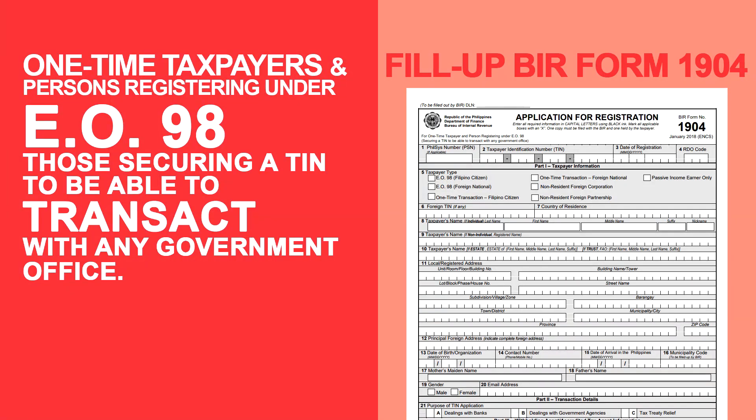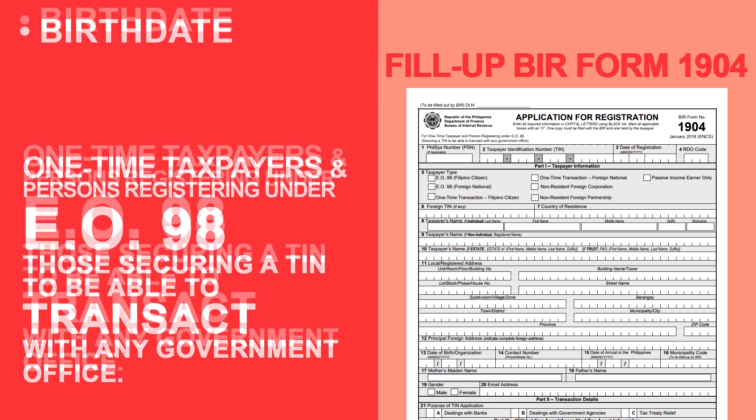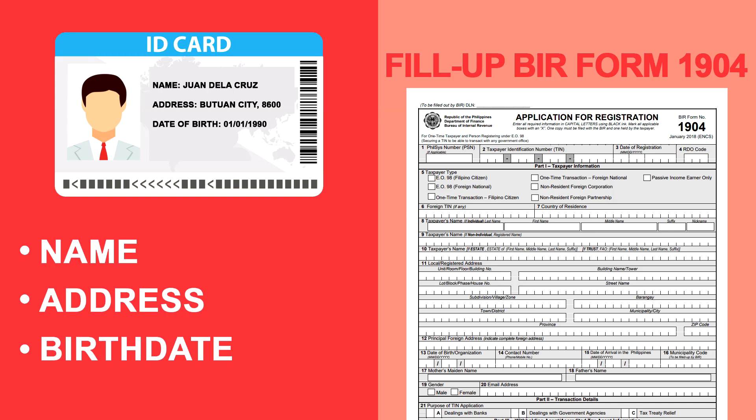And lastly, for one-time taxpayers and persons registering under EO 98, or those securing a TIN to be able to transact with any government office: fill up BIR Form 1904 and present the following attachments — any identification issued by an authorized government body that shows the name, address, and birth date of the applicant.